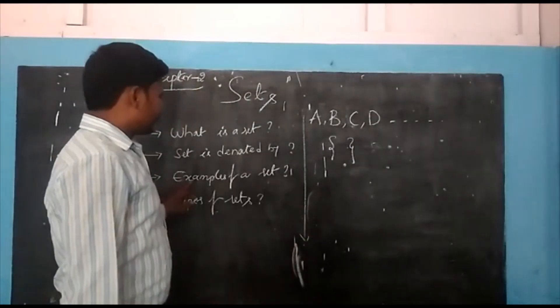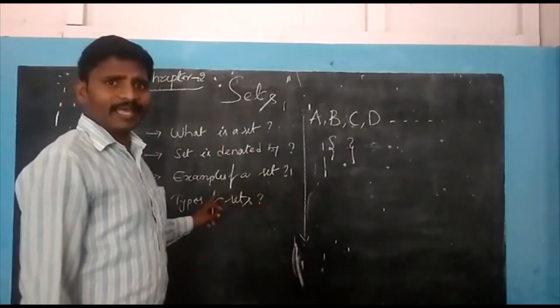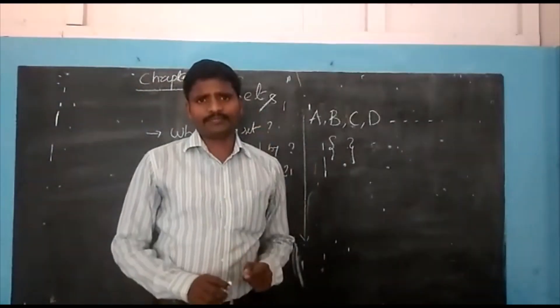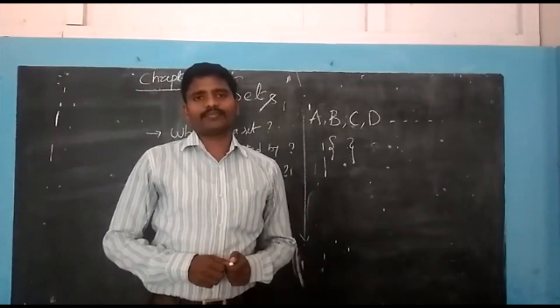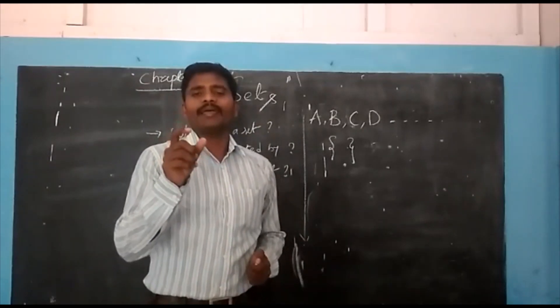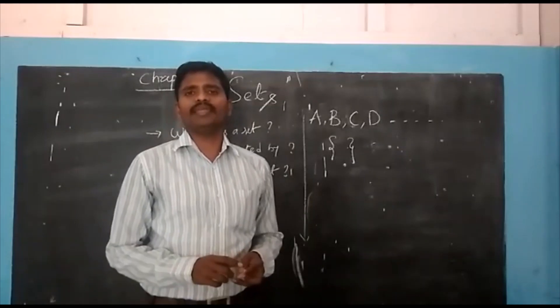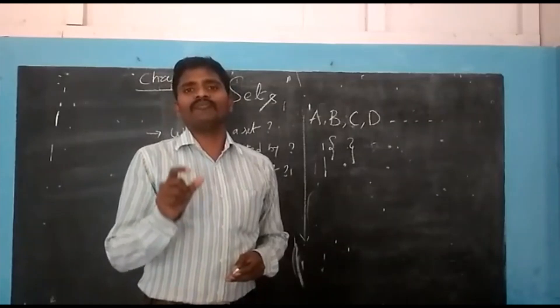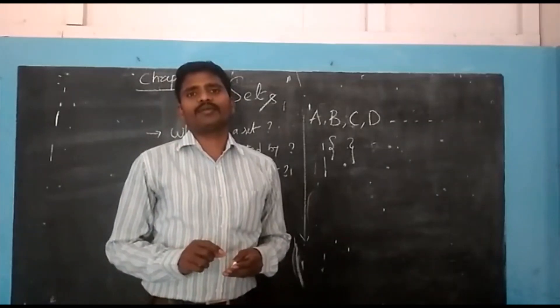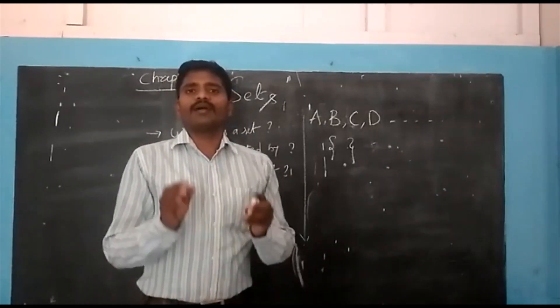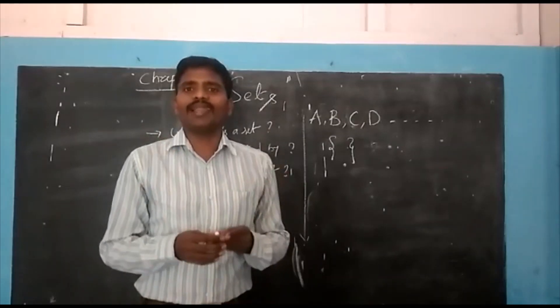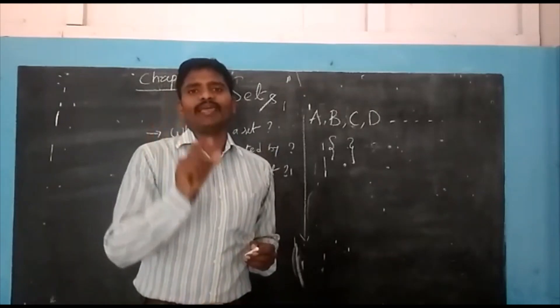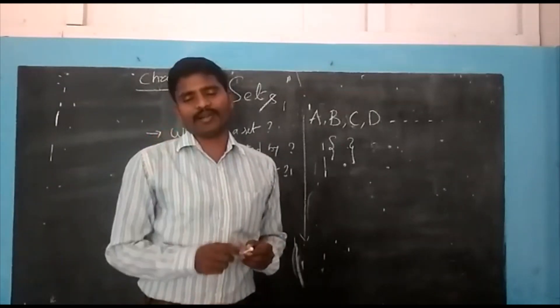Now, for an example of a set. The best example for a set is our classroom. How? In a classroom we have a limited number of people. A group also contains a limited number of people. That's why the classroom is a best example for a set.